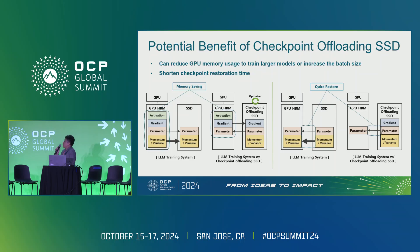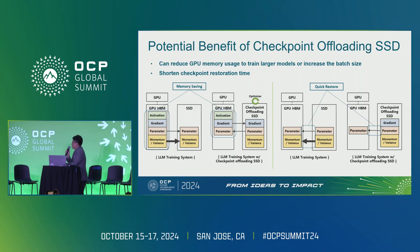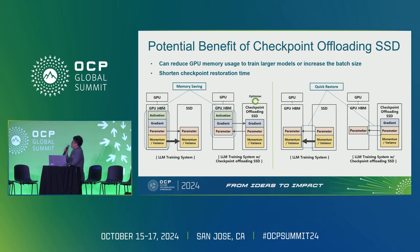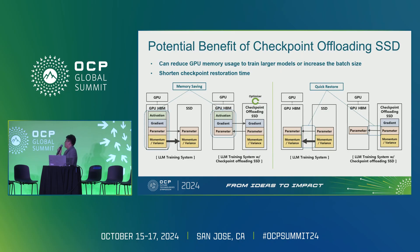Another potential benefit is saving GPU memory usage — this means we can train a larger model or increase batch size, improving GPU utilization. As shown in the left figure, GPU memory usage is reduced with the checkpoint uploading SSD. Additionally, checkpoint restoration time is shortened: with checkpoint uploading SSD, we only need to restore the parameter data to the GPU from the SSD, enabling a quicker restore compared to the baseline.